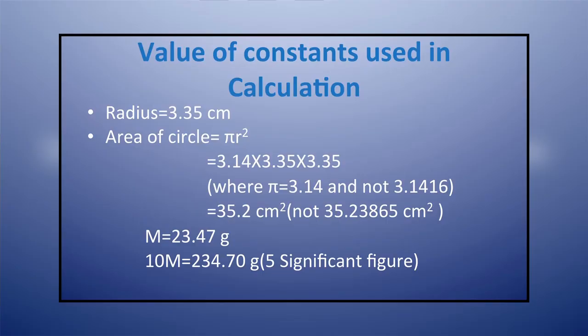If a measured quantity is multiplied by a constant, all the digits in the product obtained by multiplication are significant. So if a quantity m = 23.47 gram is multiplied by 10, then 10m = 234.70 gram, which has 5 significant figures. The zero here is also significant and all the digits in the result are significant.